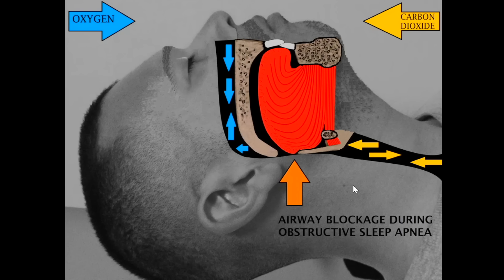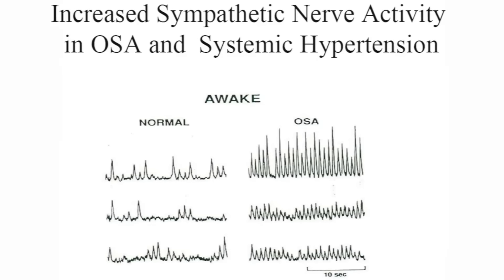As a result, oxygen levels drop and the brain senses that and becomes very panicked. Our sympathetic nervous system becomes activated to arouse us out of sleep so that the airway can open up. Our heart rate goes up, our blood pressure goes up. And over repeated stimulations throughout the night, eventually the sympathetic nervous system becomes hyper-ramped up.